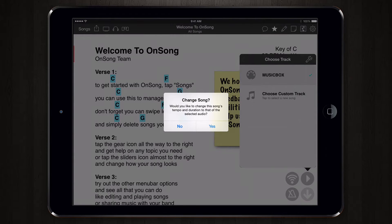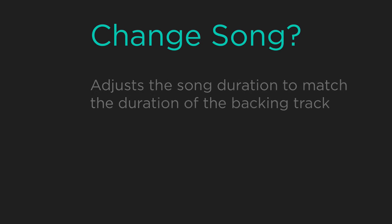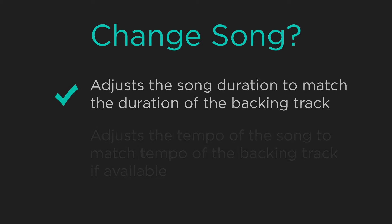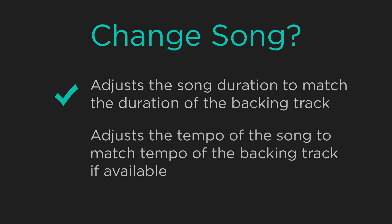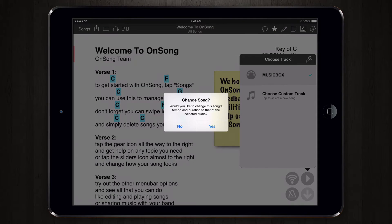OnSong prompts if we want to update the information of the song. This will adjust the duration of the song to be the duration of the MIDI file, and it will also change the tempo if that's available. This is optional, and the backing track gets linked either way, so I'll just agree to do it.